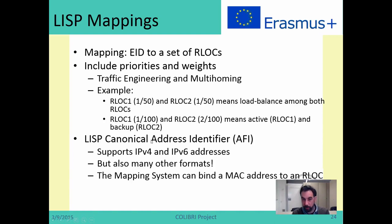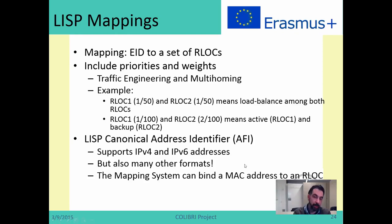It is also worth noting that LISP does not only support IP addresses. By means of the LISP Canonical Address Identifier format, it supports many other kinds of formats — you can map things other than IP addresses to IP addresses. For instance, you can map MAC addresses to IP addresses, which is relevant for Layer 2 VPNs.